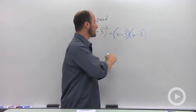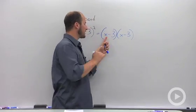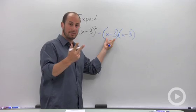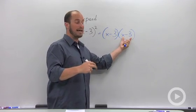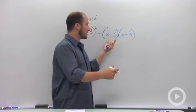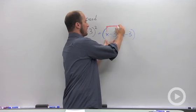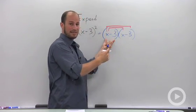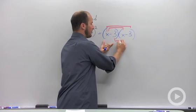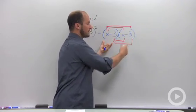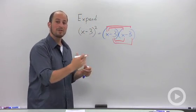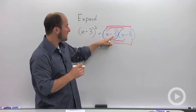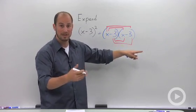What you're really doing is taking each term in your first polynomial, in this case a binomial because there's two terms, and multiplying it by every term in the other one as well. So you're doing the x times negative 3 and the x times x, and you're also taking the negative 3 times x and the negative 3 times negative 3. You're taking this x and multiplying it by everything over here, and this term here and multiplying it by everything as well.